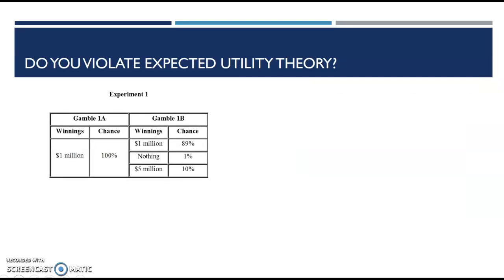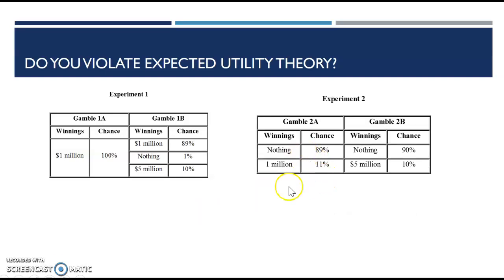Here's some experiments that have been documented leading to something called the Allais Paradox. In this situation, experiment one, gamble A: you have 100% chance of winning a million dollars. Gamble B: you have an 89% chance of winning a million, 1% chance of earning nothing, and a 10% chance of earning $5 million. What do you think most people think? Interestingly enough, most people would prefer A. Then over here, in experiment two, an 89% chance of getting nothing, an 11% chance of getting $1 million versus a 90% chance of getting nothing and a 10% chance of getting $5 million.